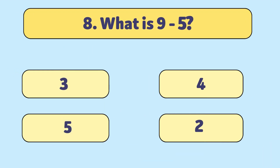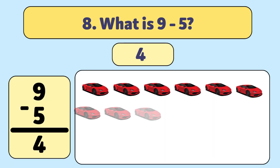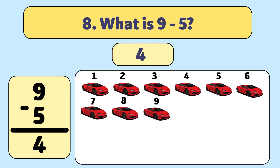What is 9 minus 5? The answer is 4. We start with 9 cars and take away 5. Let's count: 1, 2, 3, 4, 5. We have 4 cars now.